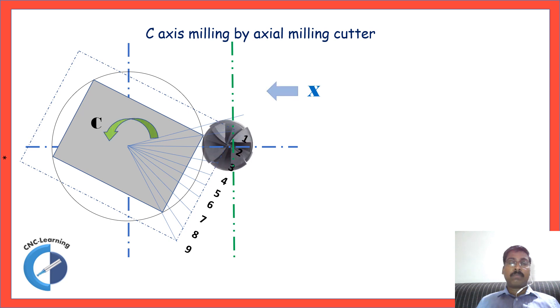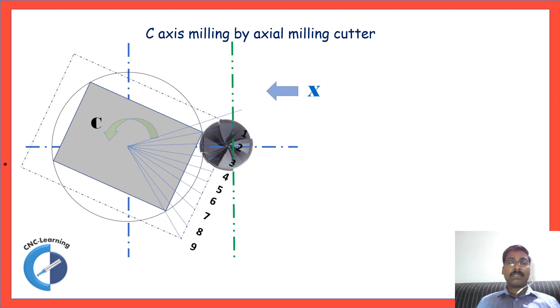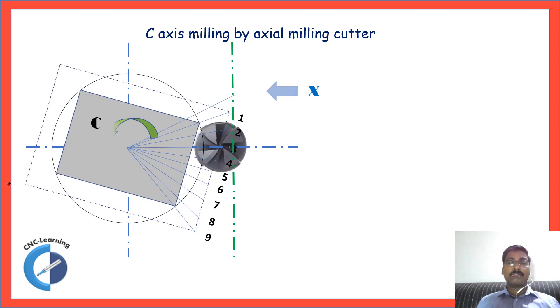So for some time X will be moving towards the center. And later you will notice that the X is moving out. So, the cutter is in one position. The movement is only the X axis. Because cutter cannot go up and down because there is no Y axis. That is the basic limitation of this particular machine with only C axis.